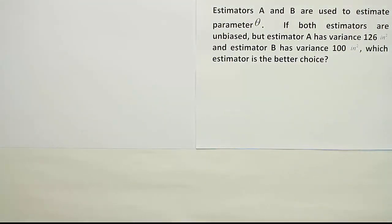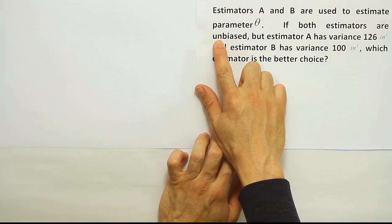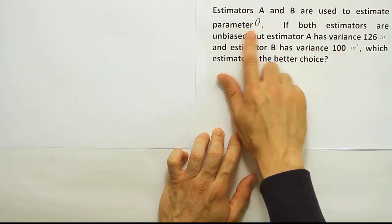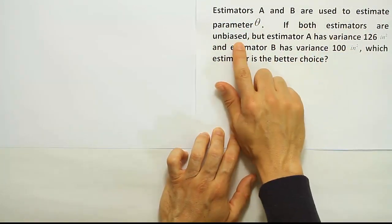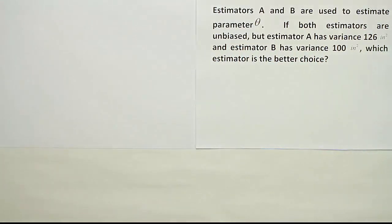So the idea behind this problem is that if you have two unbiased estimators, they're both unbiased, right? If both estimators are unbiased, then the deciding factor is which one has the smaller variance, which one has a smaller spread or standard deviation or variance.